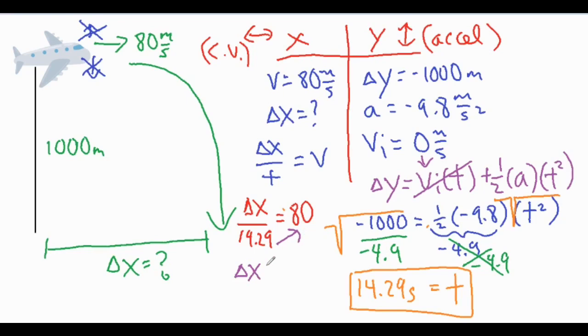So if I go ahead and cross multiply the 14.29 over to this side, then that gives me our delta x, which equals 1143.2 meters. And that is our final answer of where our package is going to land.